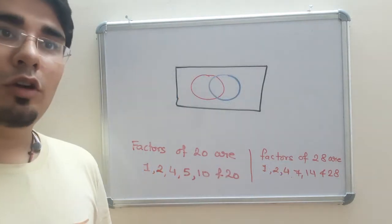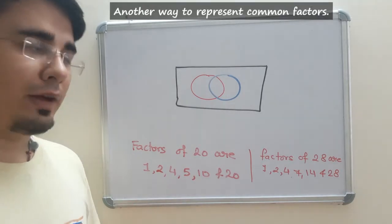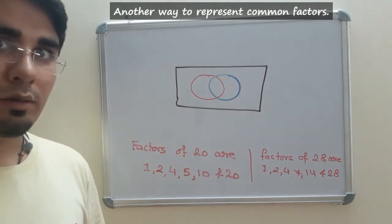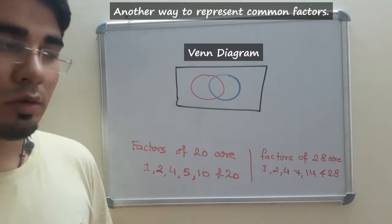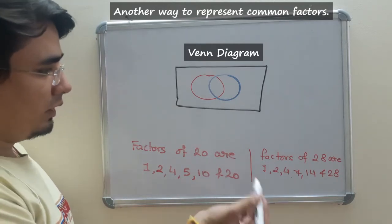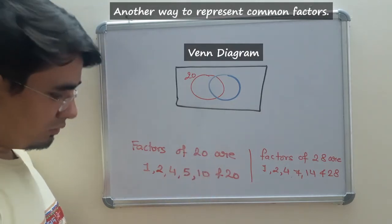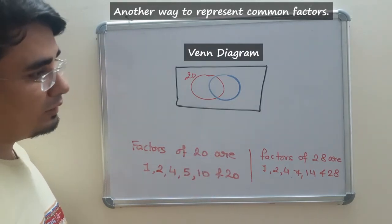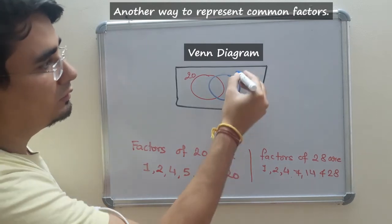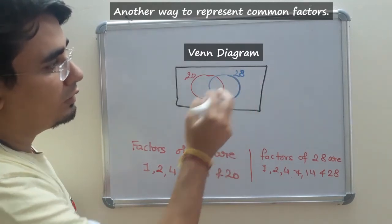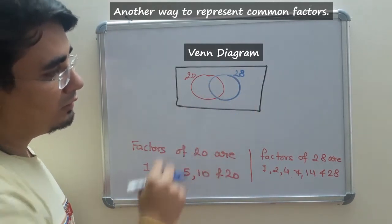There is one more way of finding out the common factor. This is called Venn diagram, which you will be studying soon. So what I can do is, I can write factors of 20 over here, and factors of 28 in this circle. And whatever the factors which are common, I can write it over here.